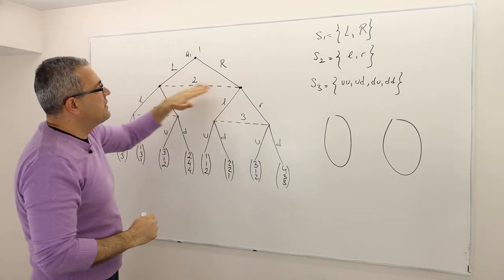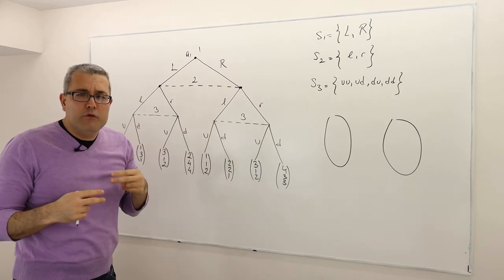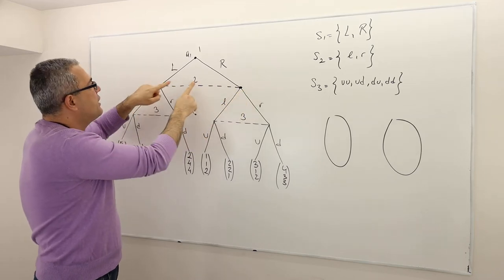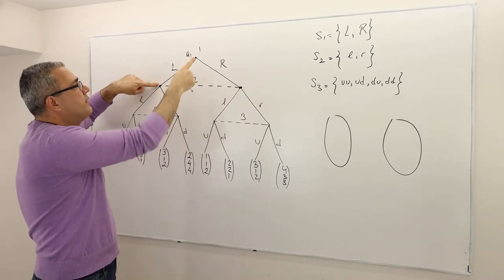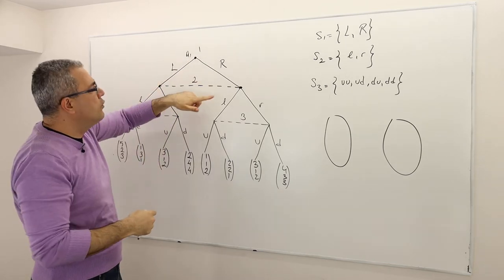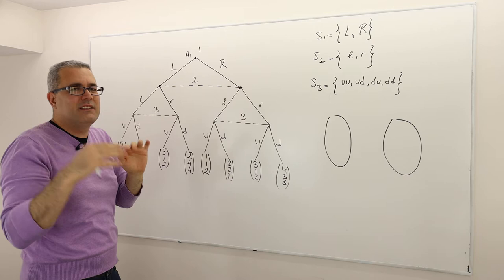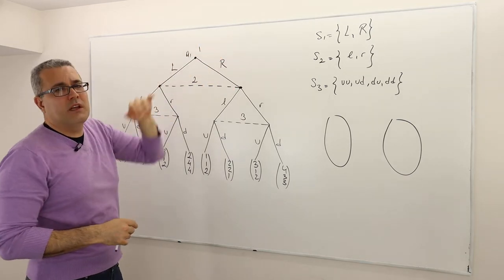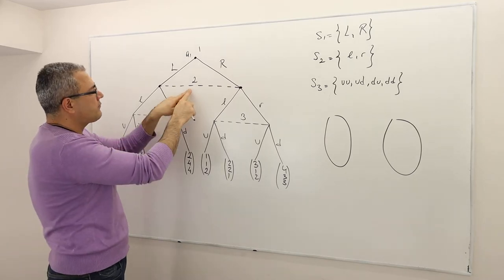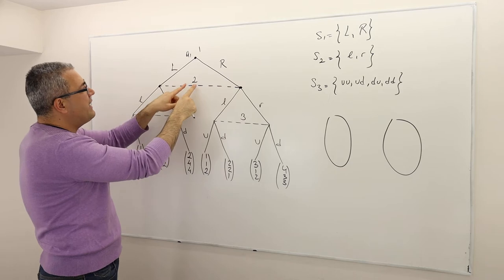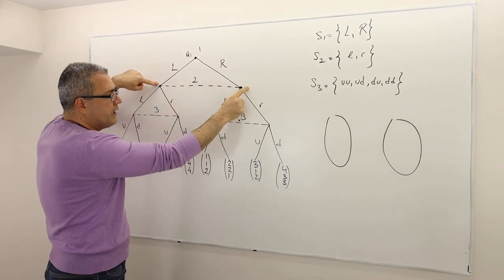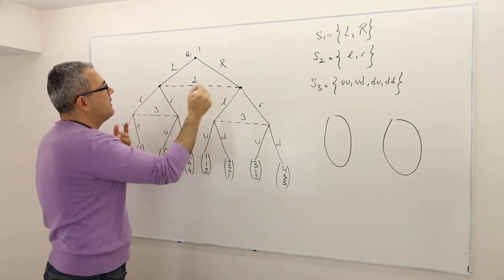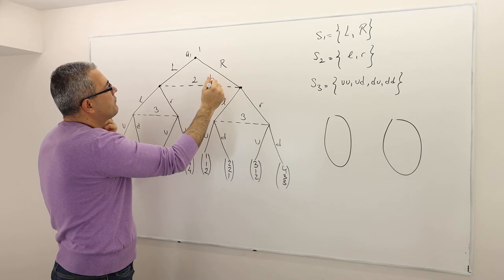How many information sets does player two have? Player two moves in this game in two possible scenarios — she may move here after player one plays L, and she may move here after player one plays R. But the thing is, player two has only one info set, meaning she cannot distinguish whether she is at one decision node or the other. I'm going to call this info set B2.